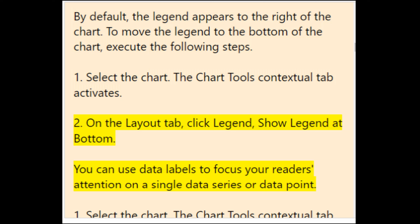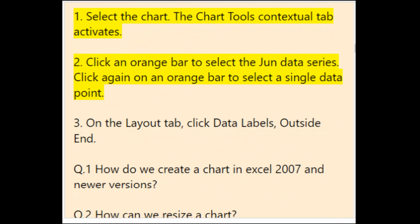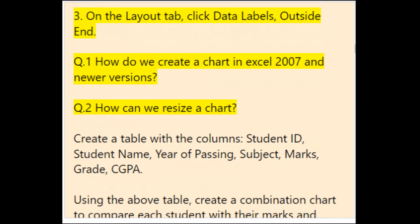You can use data labels to focus your reader's attention on a single data series or data point. Select the chart, click an orange bar to select the June data series, then click again on an orange bar to select a single data point. On the Layout tab, click Data Labels > Outside End.